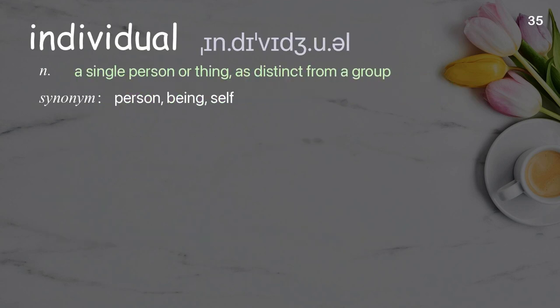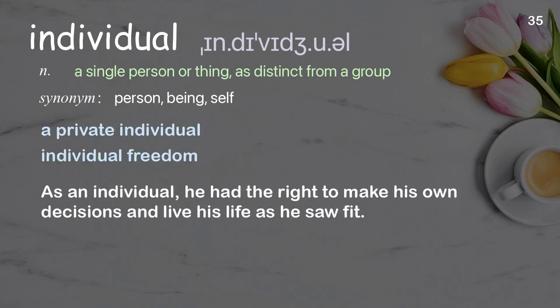Individual: a single person or thing as distinct from a group. Examples: a private individual, individual freedom. As an individual, he had the right to make his own decisions and live his life as he saw fit.